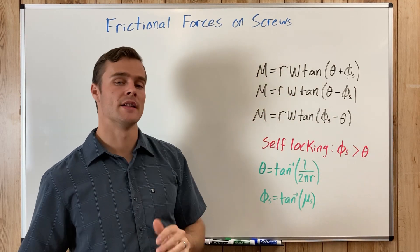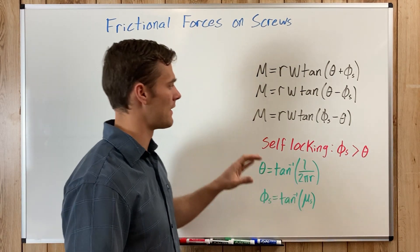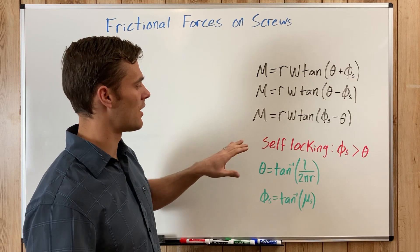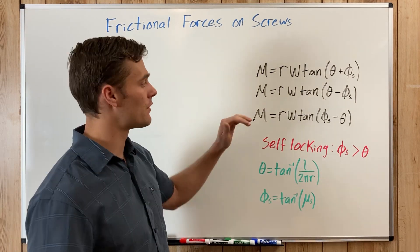When the impending motion is in the same direction as W, you use one of these two equations. Which one you use depends on whether or not it is self-locking. If the screw is not self-locking, you use this equation.